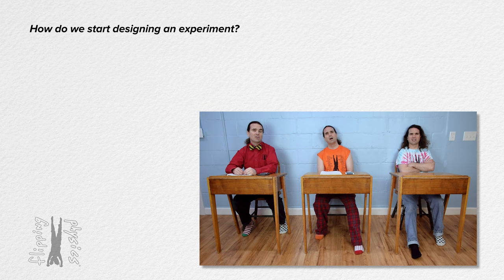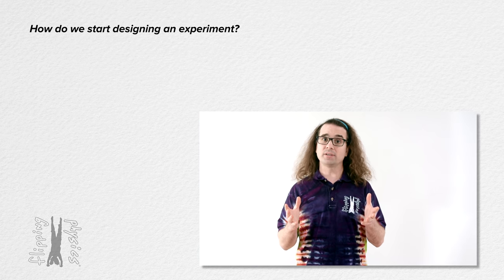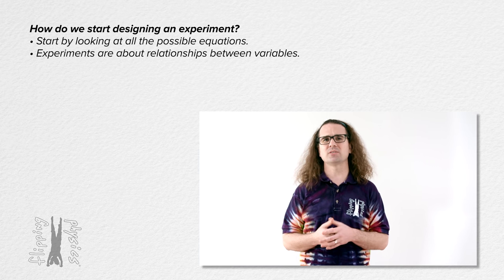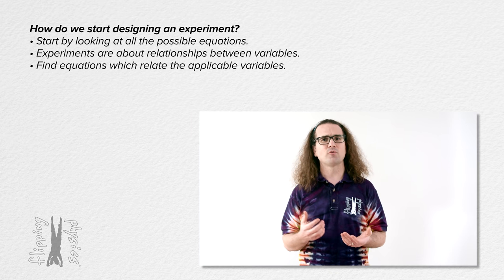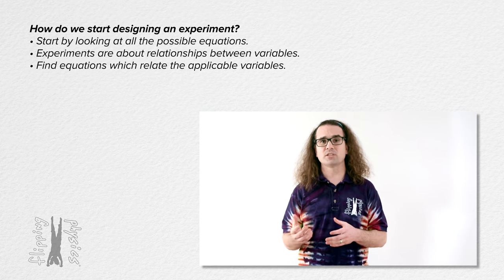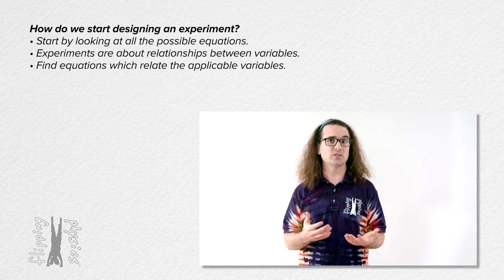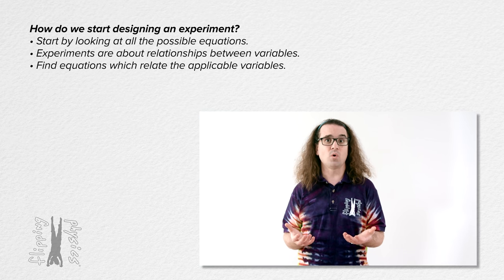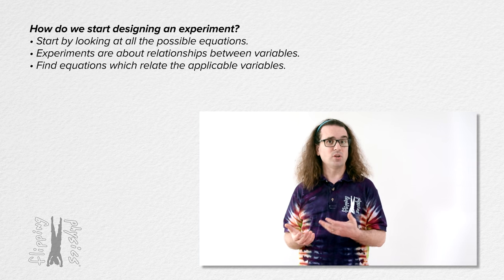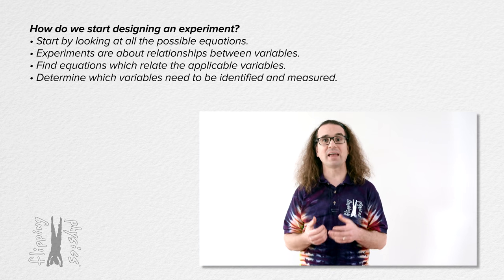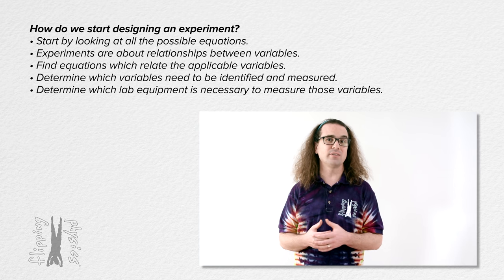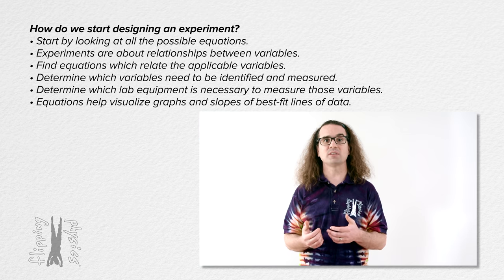But how do we start designing an experiment? I would say you should start by looking at the equation sheet. The experiment is usually about finding a relationship between variables, so you should find equations which have to do with the variables in the experiment. For example, if the experiment involves testing friction, look for equations involving friction and use that as a starting point. If it involves springs, what equations involve the spring constant? If it involves collisions or waves, find the applicable equations. When you have identified applicable equations, you can determine which variables need to be measured and which lab equipment will be necessary. The equations should also help you visualize what the graph will look like and what the slope of the best fit line will represent.